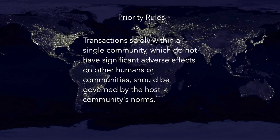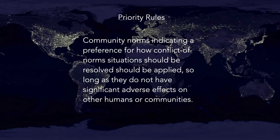For these priority rules, first: transactions solely within a single community that don't have significant adverse effects on other humans or communities should be governed by the host community's norms — in other words, if there are no big negative externalities, just when in Rome, do as the Romans do. Second: community norms indicating a preference for how conflicts of norms should be resolved should be applied — not only follow the host country's norms, but also resolve conflicts the way that community resolves conflicts, as long as there are no significant negative externalities.